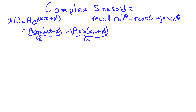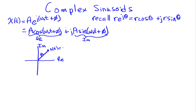We can sketch this in the complex plane. Drawing our axes — the real axis and the imaginary axis — the waveform X of t has length A, and the phase is omega-naught t plus phi. This is a vector that is changing its location with time. X of t has length A, and the angle of this vector changes with time, rotating at a rate given by omega-naught. The starting angle is phi.